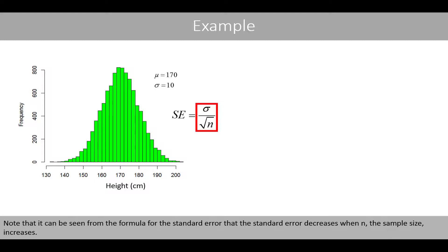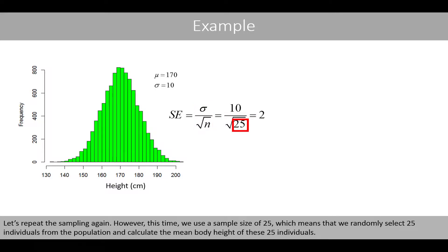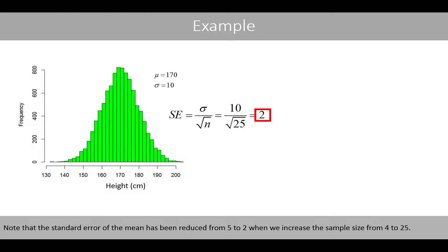Note that it can be seen from the formula for the standard error that the standard error decreases when n, the sample size, increases. Let's repeat the sampling again. However, this time we use a sample size of 25, which means that we randomly select 25 individuals from the population and calculate the mean body height of these 25 individuals. Note that the standard error of the mean has been reduced from 5 to 2 when we increase the sample size from 4 to 25.